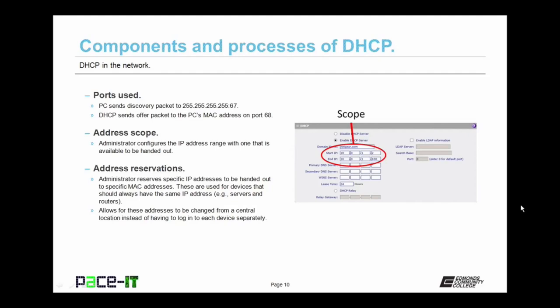Then there's the address scope. The address scope is the IP address range that the administrator configures on the DHCP server — the range of addresses the DHCP server can hand out to individual nodes. There are also address reservations — administrator-configured reserved IP addresses. The administrator reserves specific IP addresses to be handed out to specific MAC addresses. These are used for devices that should always have the same IP address, such as servers and routers.